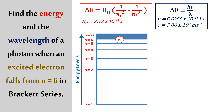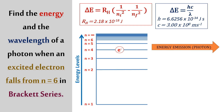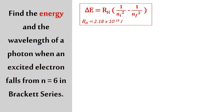When an electron falls from n equals 6 — so in the beginning, this electron is at the ground state, absorbs energy, goes up to n equals 6, and then falls down to n equals 4 in the Brackett series, releasing energy in the form of a photon. So we're going to find the energy first. Remember, n_initial is 6 and n_final is 4 because we want to find the Brackett series.